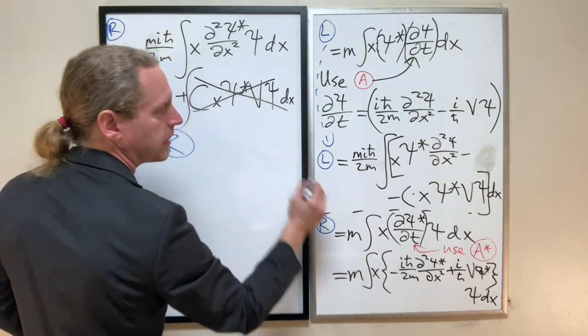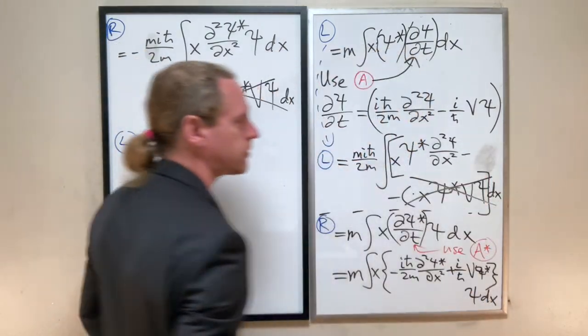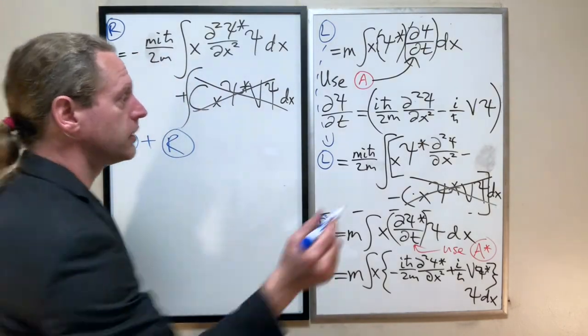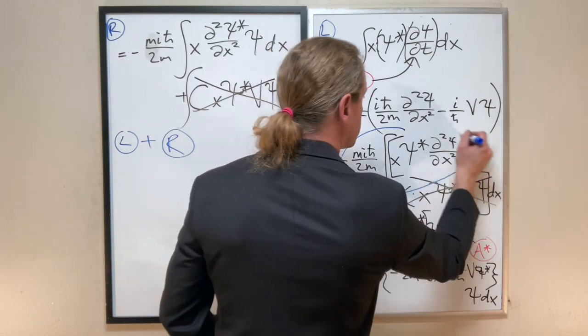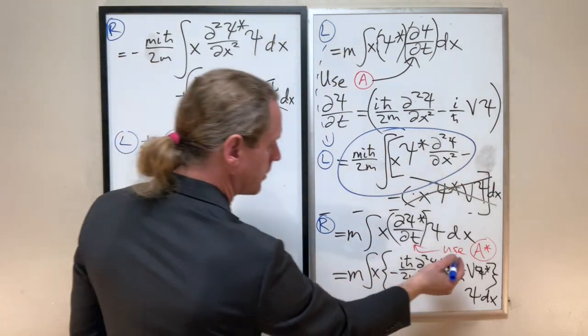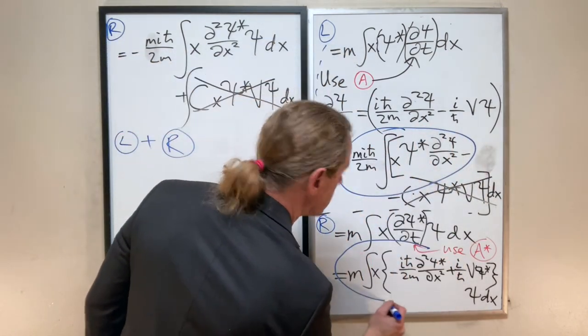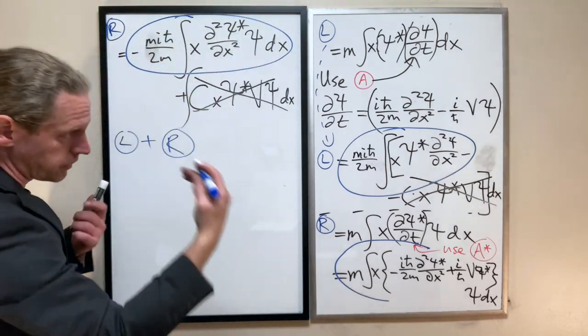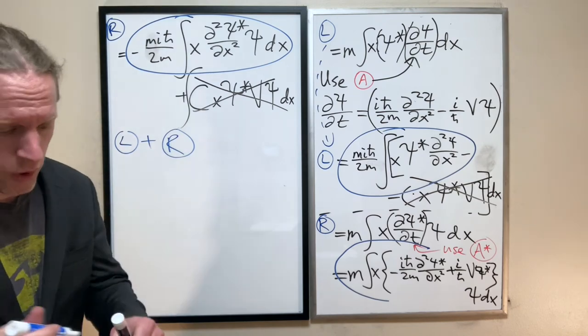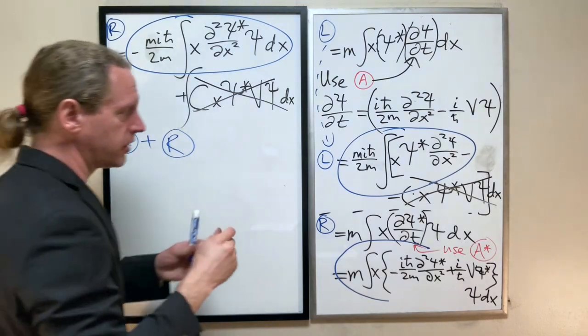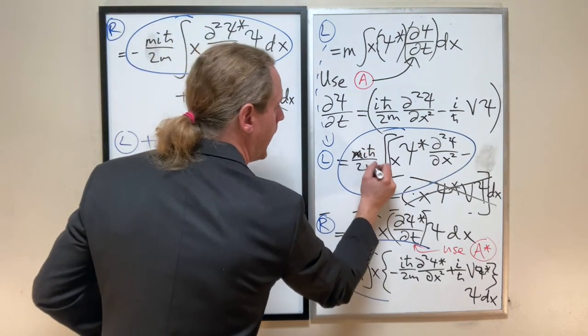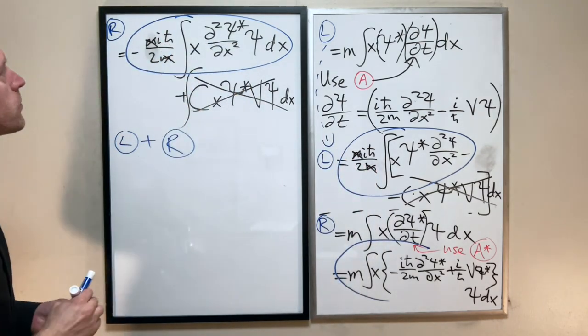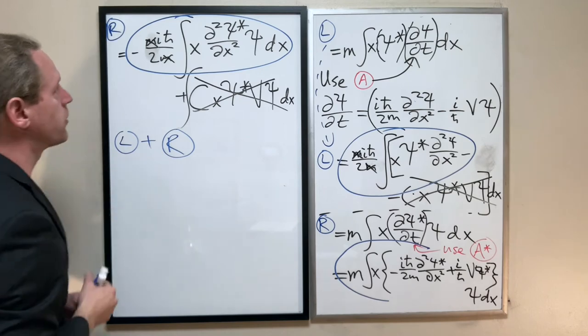Strictly by taking the complex conjugate of the Schrodinger equation, which is exactly what A and A star are, simply by flipping that i there, we introduce the exact opposite sign for the Psi star V Psi term. This cancels that. And one more thing to note: the masses will cancel.